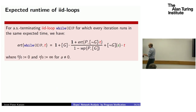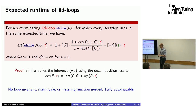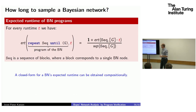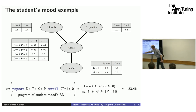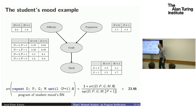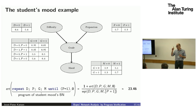You can find a closed-form formula for the runtime of your Bayes network fully automatically. For the student BN example, applying the closed-form WP formula gives an expected runtime of 23.4 — meaning almost 23.5 runs are needed to get one IID sample.